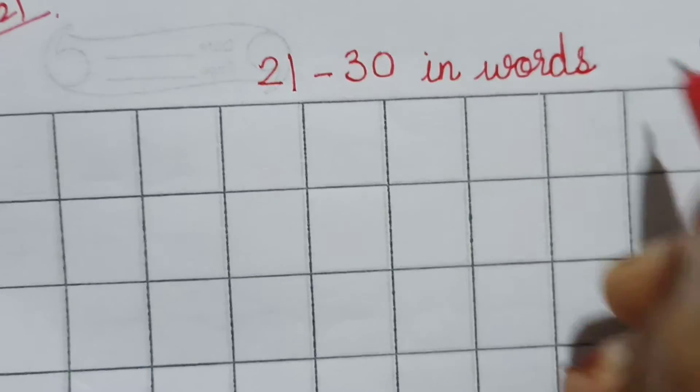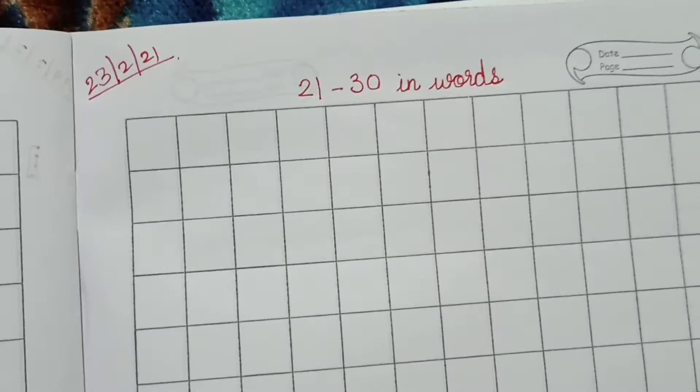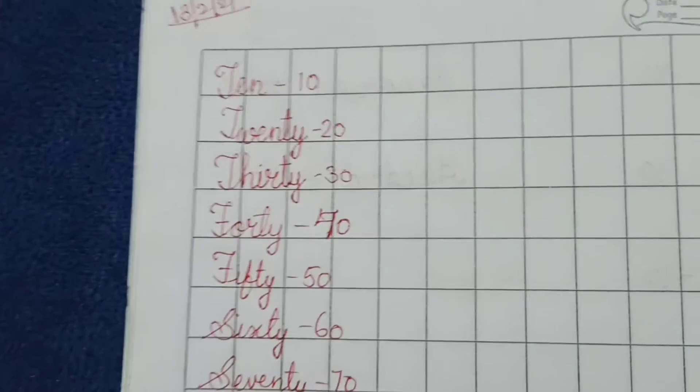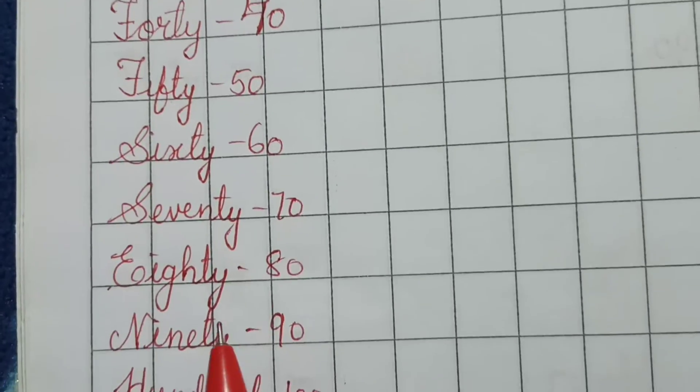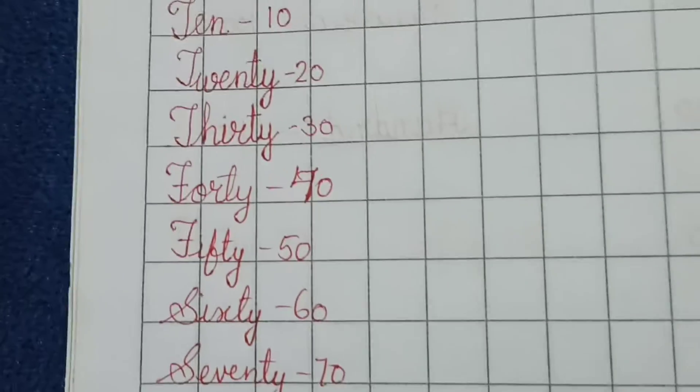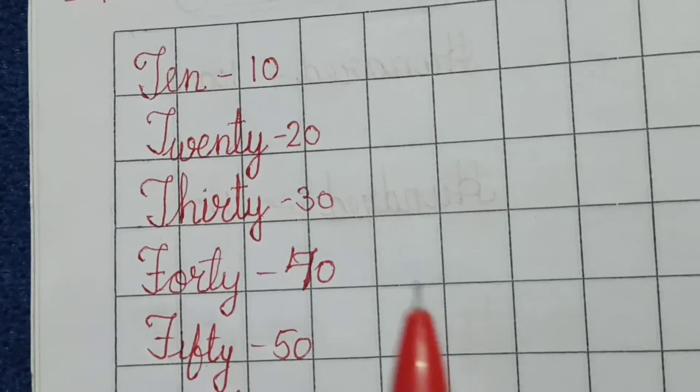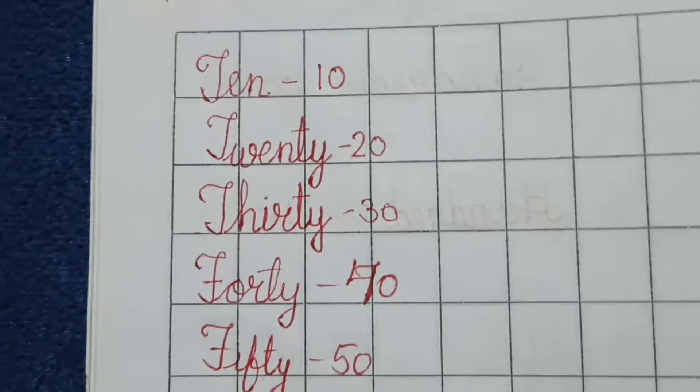So we have learnt to write the words: 10, 20, 30, 40, 50, 60, 70, 80, 90, 100. Today we will write the spelling of 21 till 30.